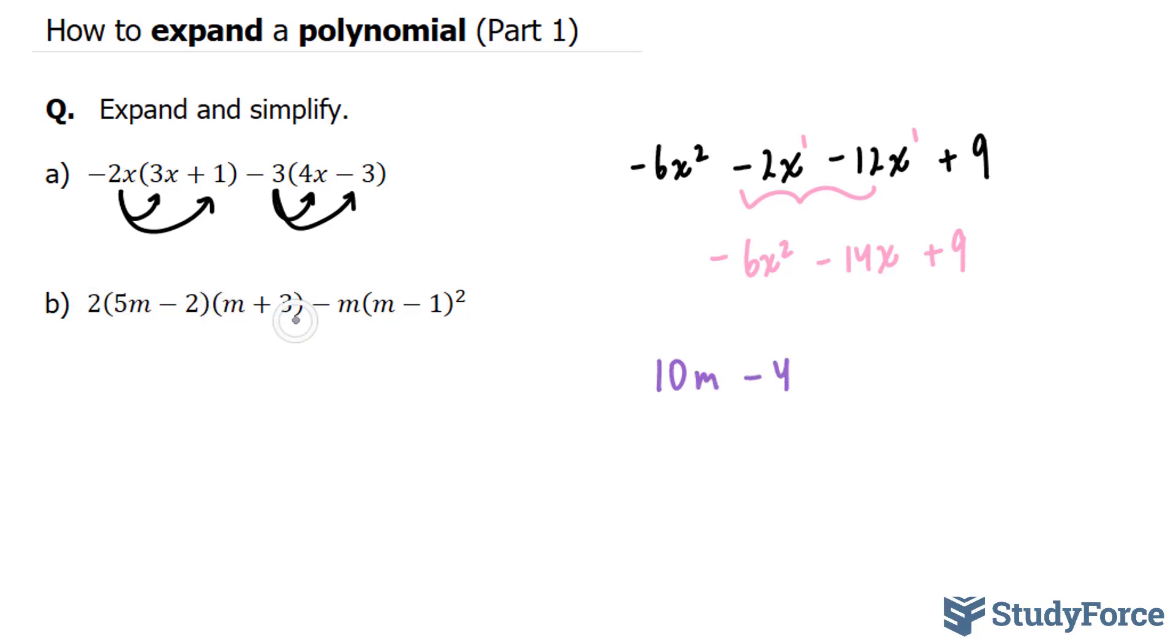Now, since there is another bracket to its right, we are going to enclose these two terms with brackets and these two terms are going to remain in their brackets, m plus 3.